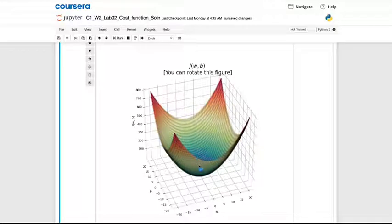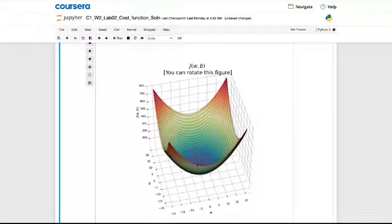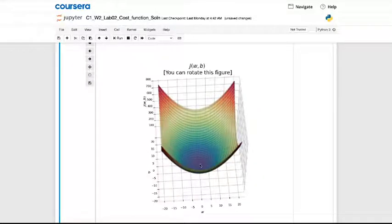Finally, the optional lab also has a 3D surface plot that you can manually rotate and spin around using your mouse cursor to take a better look at what the cost function looks like. I hope you enjoy playing with the optional lab.